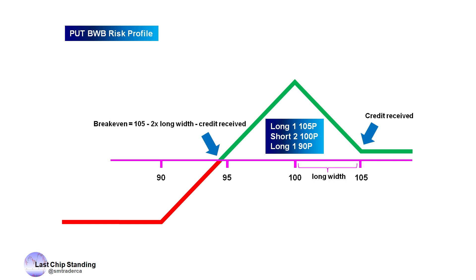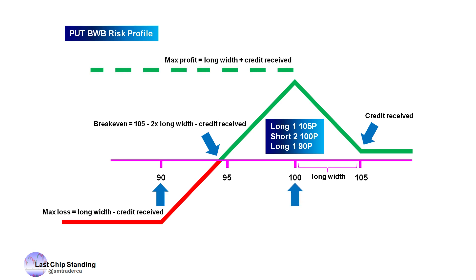The breakeven price for this trade is 105 minus 2 times the width of the long vertical minus the credit we receive. So for example, if we receive a credit of $0.50 when we set up this trade, then the breakeven price is 105 minus 10 minus 50 cents, which equals $94.50. We will incur a maximum loss when the underlying expires at 90. That loss is the width of the long vertical minus the credit we receive, which is $5 minus 50 cents, or $4.50. We will realize maximum profit when the underlying expires at the short strike of 100, and that amount is the width of the long vertical plus the credit we receive, which is $5 plus 50 cents, or $5.50.